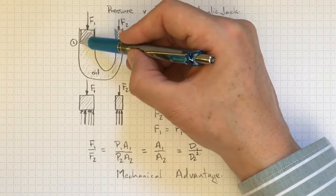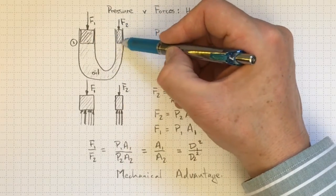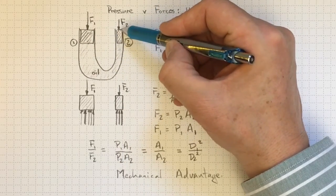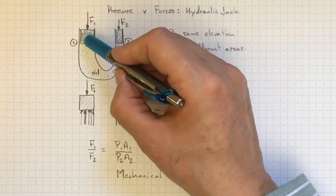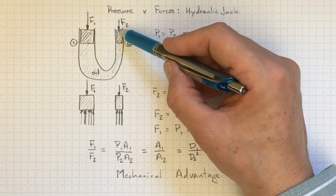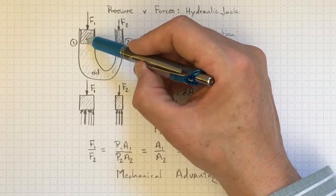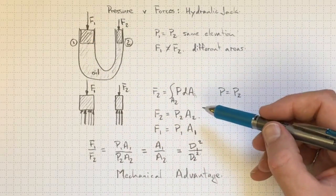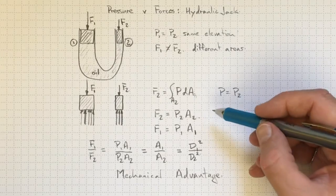So suppose this piston is twice as big in diameter as this one, which is about how I've drawn it. I'll get four times as much force over here as I've applied over here. So I'm amplifying my force to move this other piston. But I'm not getting something for nothing,